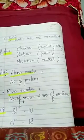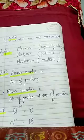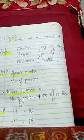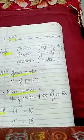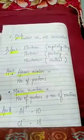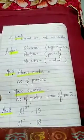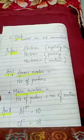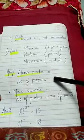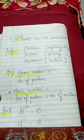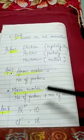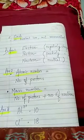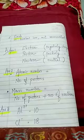Question number 2: how is the atomic number and mass number related to the number of neutrons and protons present inside an atom? Atomic number is equal to the number of protons present in the nucleus of an atom. Mass number is equal to number of protons plus number of neutrons present in the nucleus.